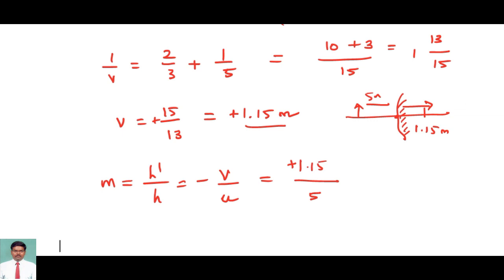Already there is a minus here, so all turns to be 1.15 divided by 5. On dividing this, I am going to get 0.23 magnification.